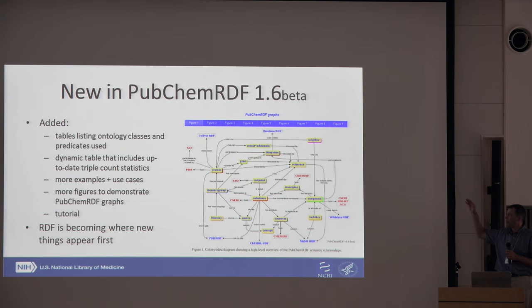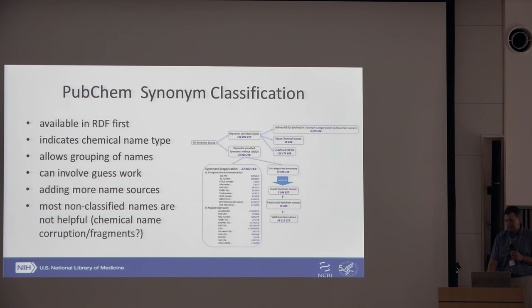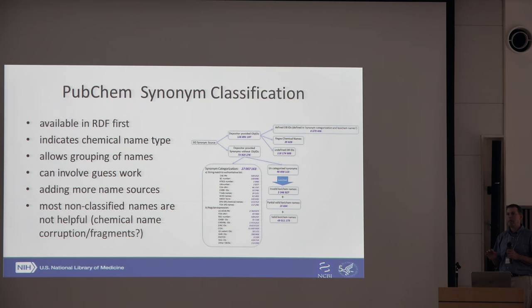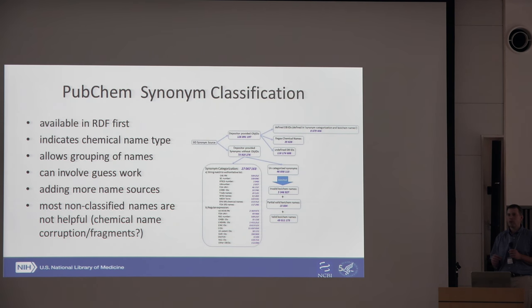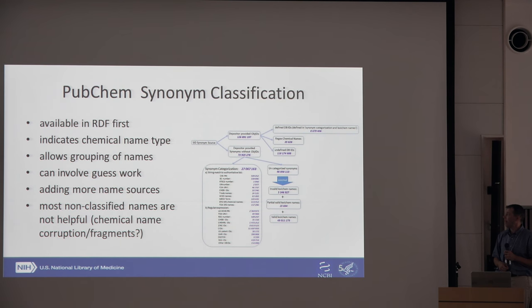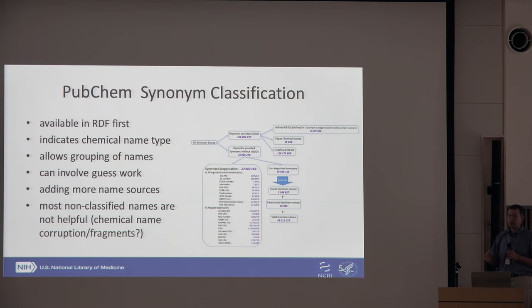For most users they would be completely blind to that. As an example, we have a synonym classification. There are over 200 million chemical names inside PubChem, and we're classifying them in part because quite a number are name fragments, or there are conversion errors where somebody went from Unicode to ASCII and some characters were truncated or removed. As part of our name classification, we can separate out these junk names from the regular names. It also allows you to do more with the content — for instance, if you're only interested in CAS numbers, you could find them all quite rapidly using the RDF.